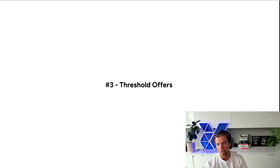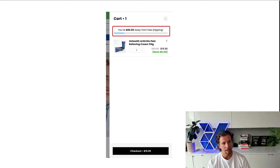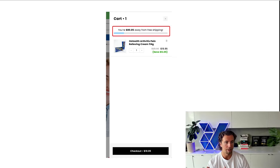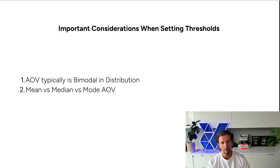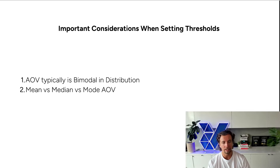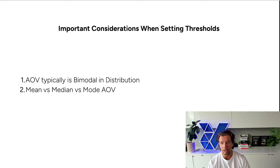Number three is threshold offers. Everyone's seen threshold offers — almost everyone runs them these days. That's simply spend $100 get free shipping, spend $100 get $10 off, something of that nature. You can have this appear in cart or at the top of the page. There are two important considerations when setting up these threshold offers: number one is that AOV typically has a bimodal distribution, and secondly is that you need to consider mean, median, and mode AOVs — don't just set your thresholds based on what Shopify says your AOV is.